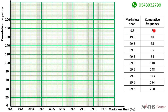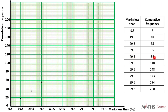Let's plot the points. The first point is (9.5, 7), the next is (19.5, 18), then (29.5, 35), then (39.5, 55), then (49.5, 84), then (59.5, 118), then (69.5, 148), then (79.5, 173), then (89.5, 194), and the last point is (99.5, 200).